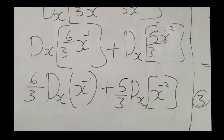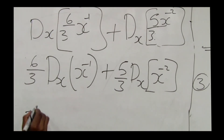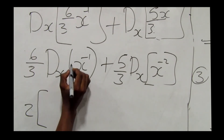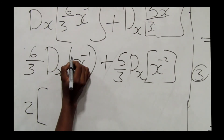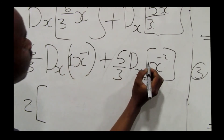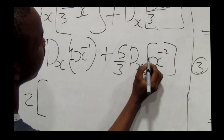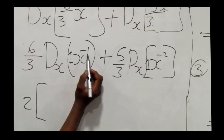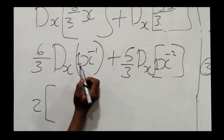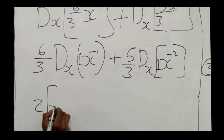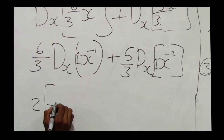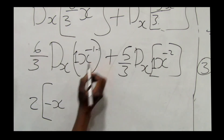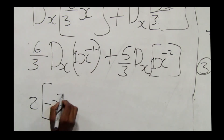Six over 3 is 2. For x to the power negative 1: negative 1 times 1 gives negative 1, and negative 1 minus 1 gives negative 2. So we get negative 2x to the power negative 2.